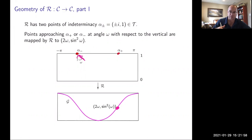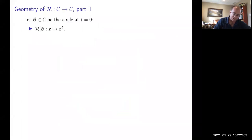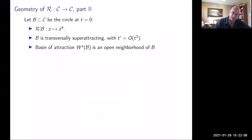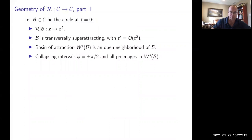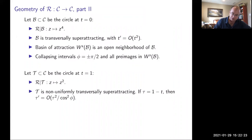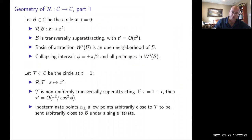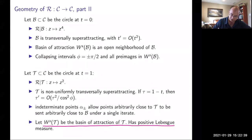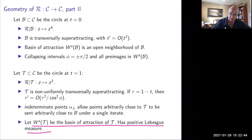The circle at the bottom (t=0) maps via z → z^4, which is transversely super-attracting with an open basin of attraction. There are some collapsing intervals. The circle at the top (t=1) has the map z → z^2, with degree 2, and is non-uniformly transversely super-attracting. The indeterminate points allow orbits very close to the top to be sent all the way to the bottom. The basin of attraction for the top has positive Lebesgue measure — better shown by computer picture.